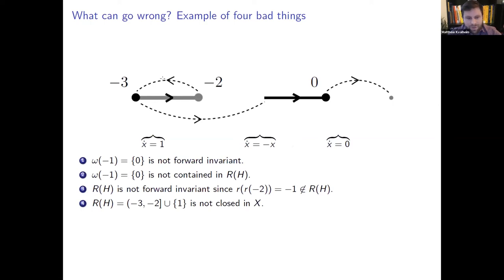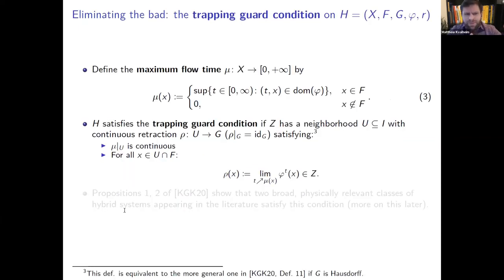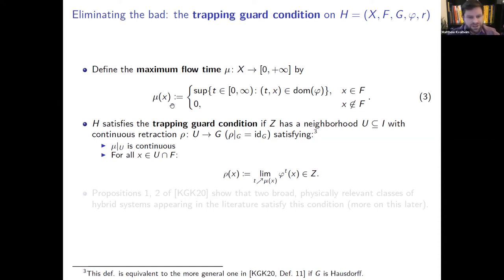This motivates a regularizing condition. The maximum flow time is defined as the longest time you can flow before hitting the guard. The trapping guard condition requires that the guard G has a neighborhood U with a continuous retraction compatible with the flow: the maximum flow time must be continuous on this neighborhood, and flowing from within it until hitting G is the same as applying the continuous retraction.